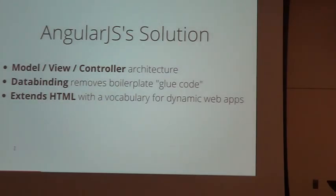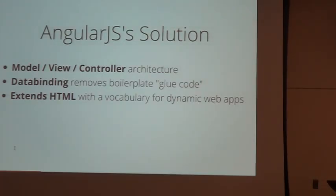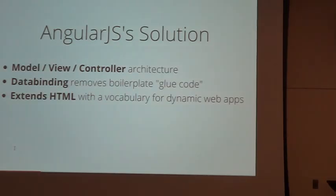AngularJS has a three-pronged solution for this. First, it adds a model-view-controller architecture, which helps keep all your concerns separate — the business logic separate from the HTML used to display results. Second, it introduces data binding, which gets rid of all that boilerplate code where we're searching for elements and manually updating them. Third, it extends HTML to provide new attributes and HTML tags that are useful for dynamic web applications.